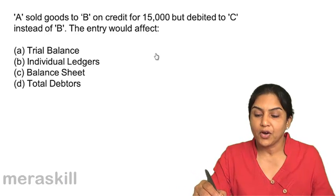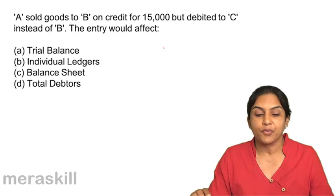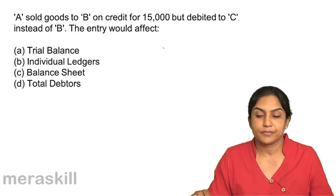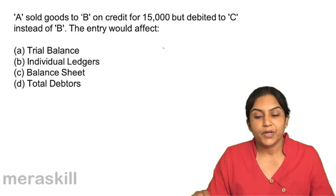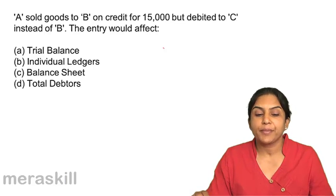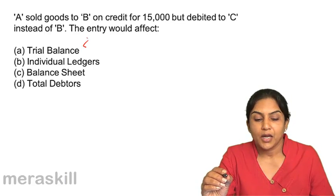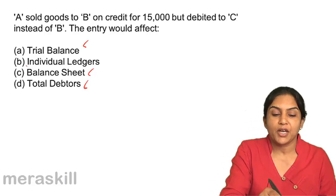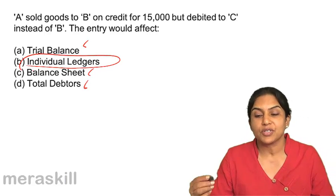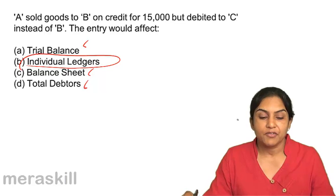A sold goods to B on credit for 15,000, but the amount was debited to C instead of B. This entry will affect: A, the trial balance; B, individual ledgers; C, the balance sheet; or D, total debtors. Since it became C account debit to sales instead of B account debit to sales, the debit and credit totals are unchanged — trial balance still tallies, balance sheet and total debtors are unaffected. But B's and C's individual ledger accounts are wrong. Correct answer is B, individual ledgers.